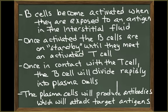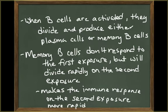B cells become activated when they are exposed to an antigen in the interstitial fluid. Once activated, these B cells are on standby and must meet with an activated helper T cell before they can divide. Once they meet with an activated helper T cell, the B cells divide rapidly to produce plasma cells. The plasma cells then rapidly produce antibodies that have the same target as the original B cell. When B cells are activated, they produce either plasma cells or memory B cells. Memory B cells do not respond to a threat on first exposure, but on a second exposure they divide and differentiate into plasma cells that secrete antibodies in massive quantities at a very rapid rate. In this way, the body can launch a much quicker immune response the second time it is exposed to a pathogen.